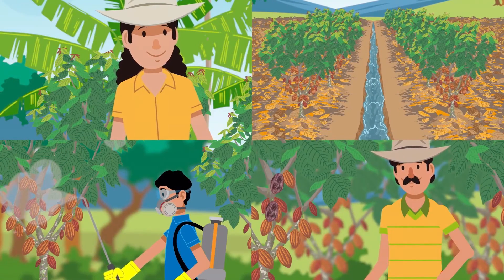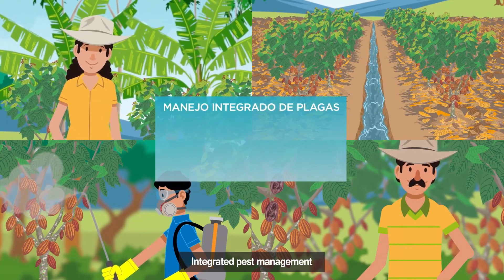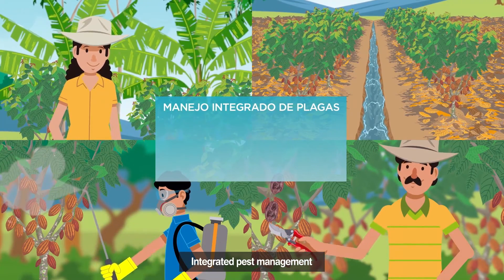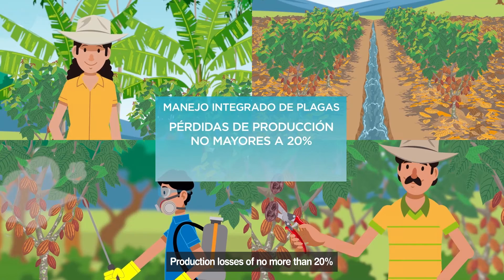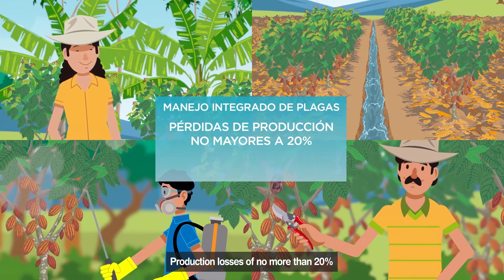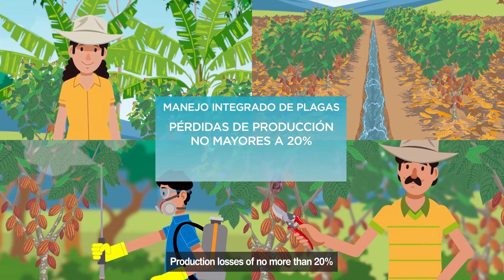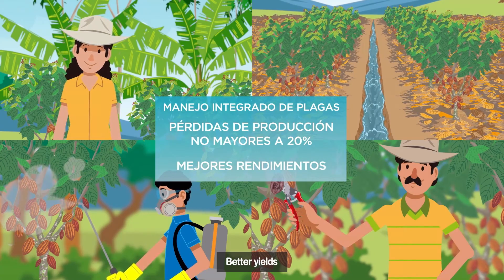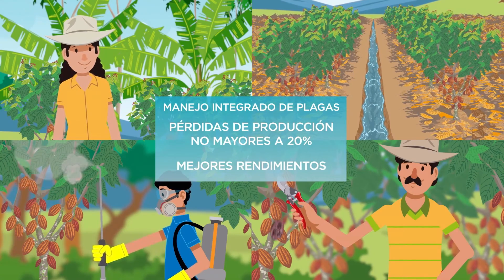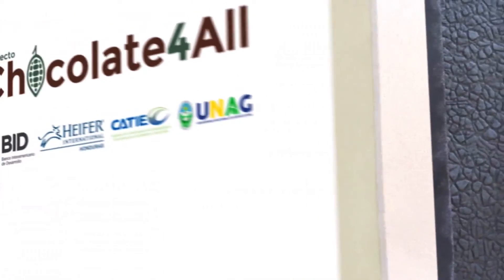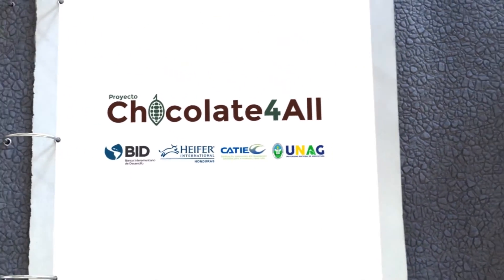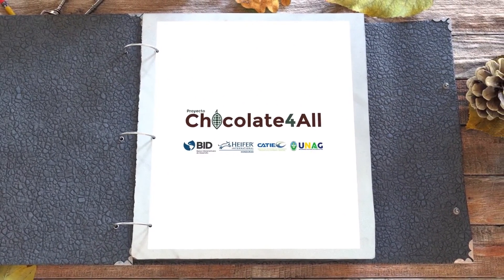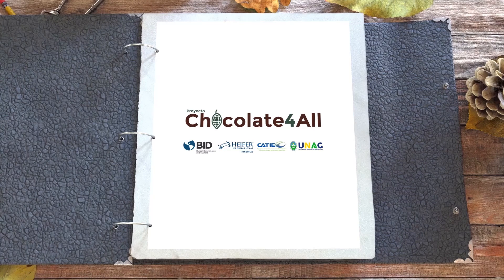Dear cacao family, if we implement integrated management like the one we have seen in this animation, production losses will not be greater than 20 percent and we will have better yields, which translate into a benefit for our pockets. Chocolate for All Project, financed by the Inter-American Development Bank and executed by Heifer International Project and Cotier in their field actions.